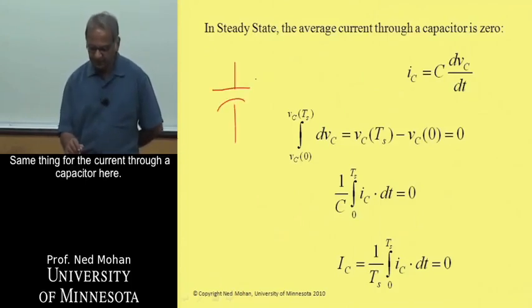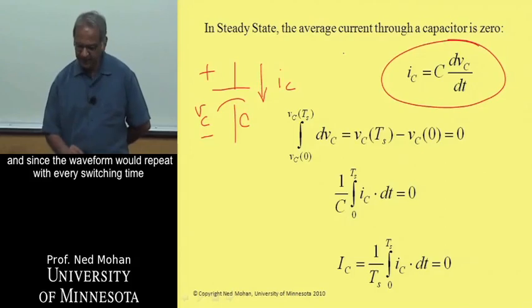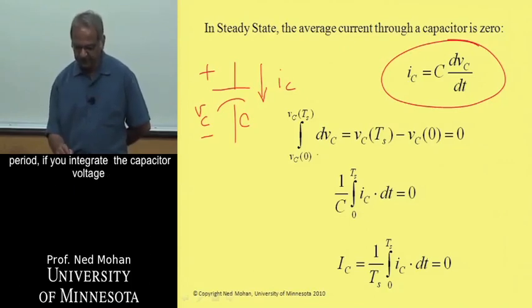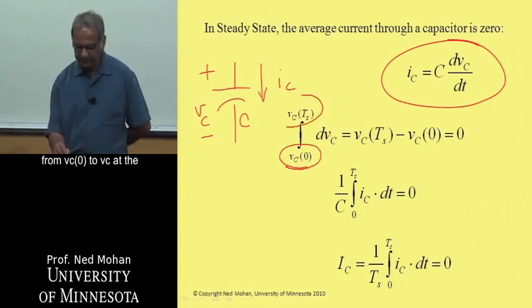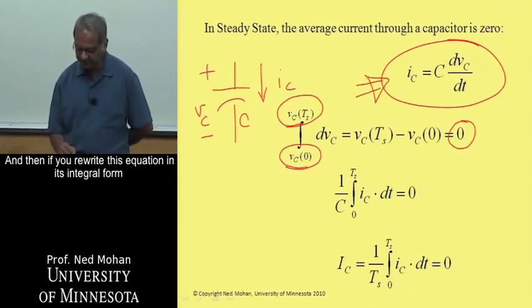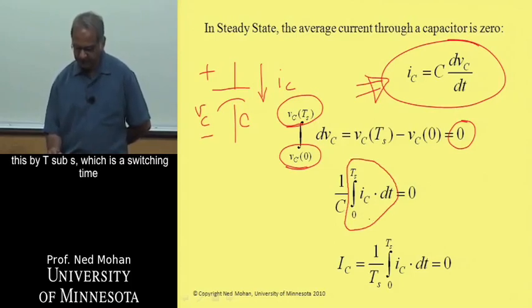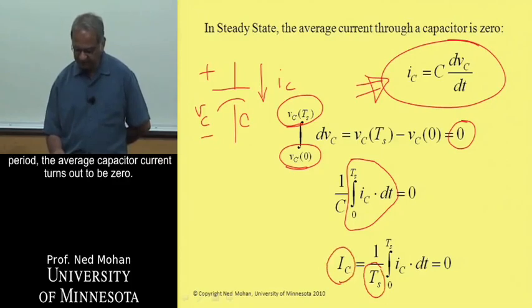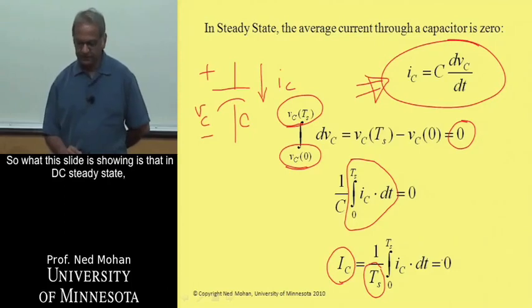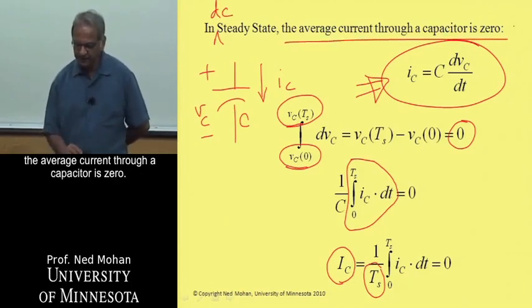The same concept applies to the current through a capacitor. If I_C is the capacitor current and V_C is the voltage across the capacitor, we can write the governing equation. Since the waveform repeats with every switching time period, integrating the capacitor voltage from V_C(0) to V_C at the end of the switching period equals zero. Rewriting in integral form, the integral of the current is zero, and dividing by T_S gives the average capacitor current, which is zero in DC steady state.